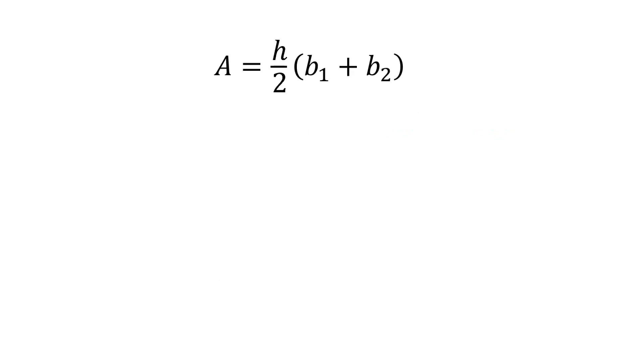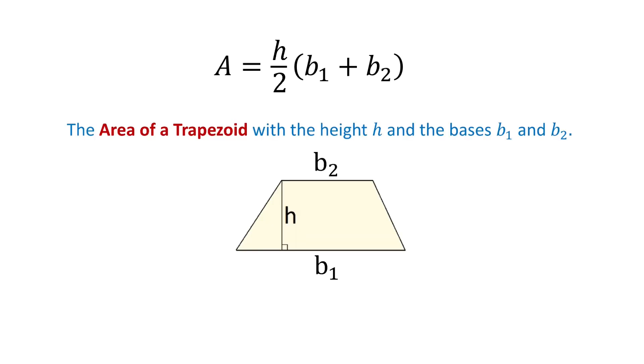The next formula is a equals h over 2 times b1 plus b2. This is the area of a trapezoid with the height h and the bases b1 and b2.